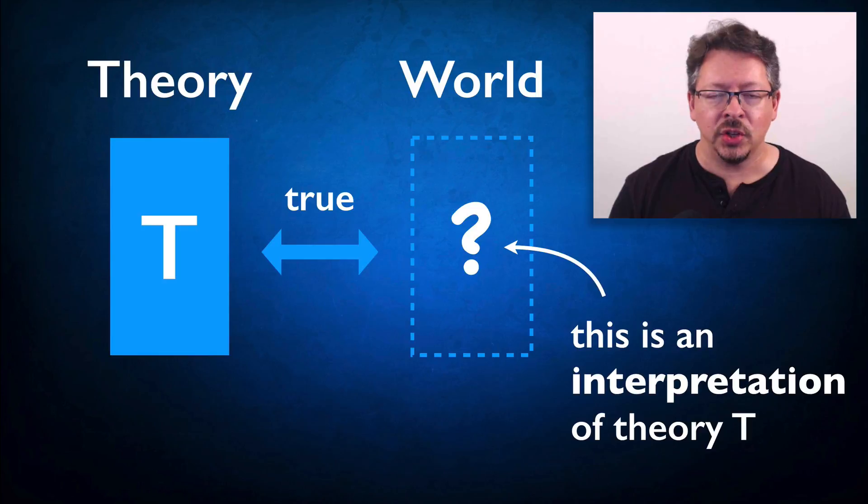So an interpretation of a theory is whatever description would replace the question mark in this picture. Now this might seem like an easy question to answer. It might seem like you could just look at a theory and read off the interpretation. But this is in fact one of the oldest and most challenging questions in the philosophy of science. Let me run through a few reasons why this is so.